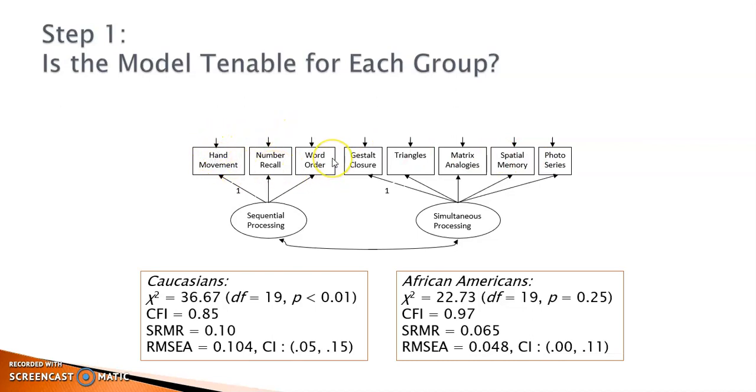Three measured variables are the indicators of sequential processing: hand movement, number recall, and word order. The five indicators of simultaneous processing are gestalt closure, triangles, matrix analogies, spatial memory, and photo series. Hand movement and gestalt closure are the reference variables for the two latent factors, respectively.